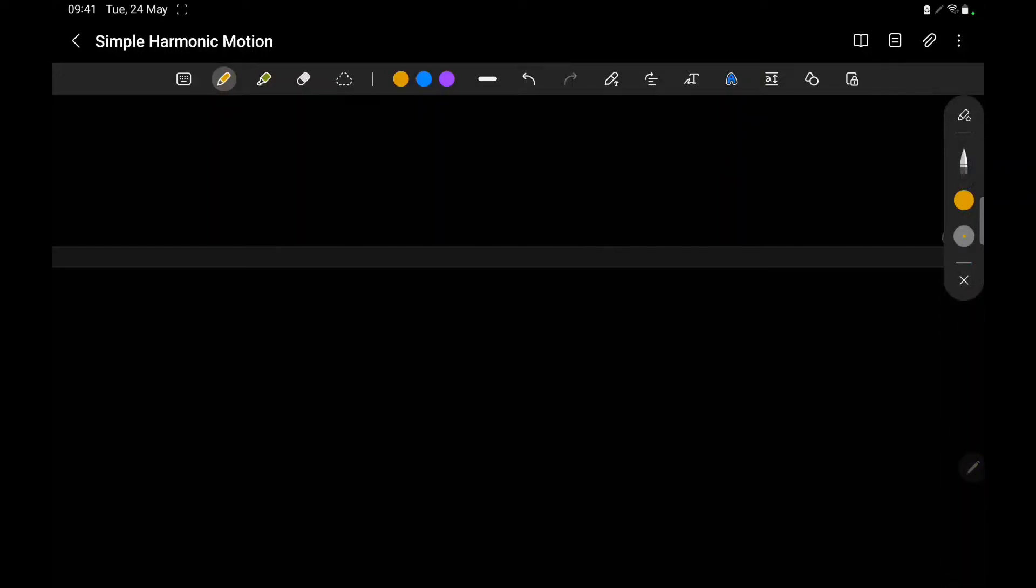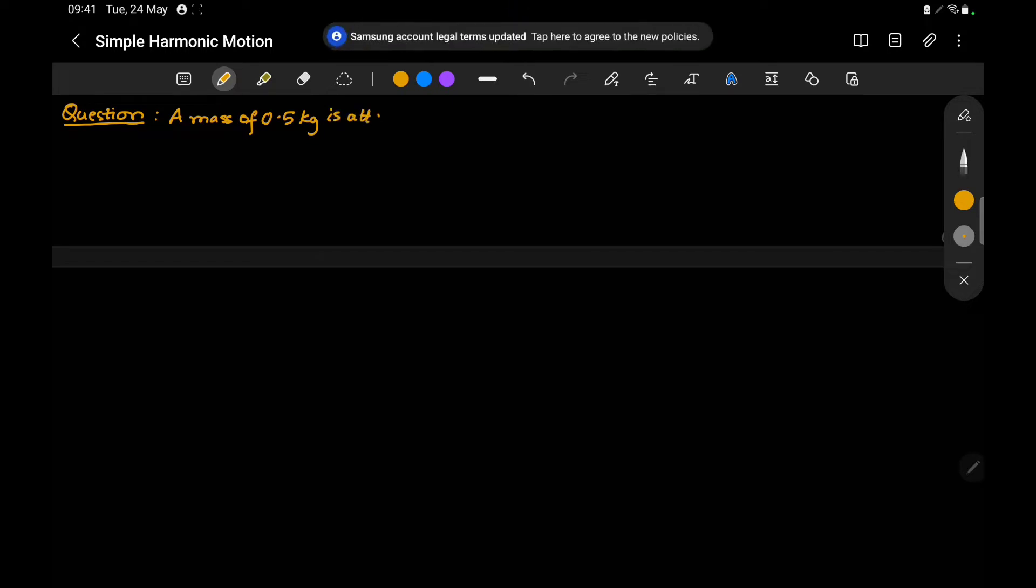This is a graphical question. We are given a graph which I will draw in a minute. The question reads: a mass of 0.5 kilogram oscillates, attached to a spring and oscillates.